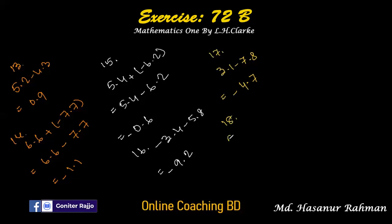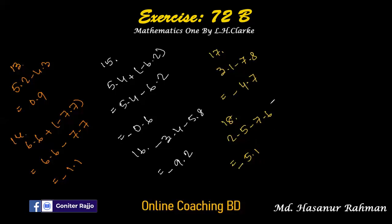Number 18: 2.5 minus 7.6. We subtract 2.5 from 7.6: 6 minus 5 is 1, 7 minus 2 is 5, so the answer is 5.1. The sign is negative because the sign of the larger number is negative.